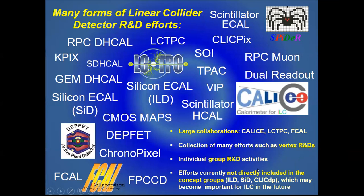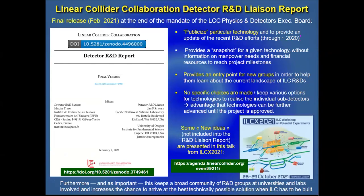Since more than 30 years, there are many forms of different linear collider R&D activities existing, which includes contributions within large collaborations such as CALICE, CTP, and CF-CAL. There are many different efforts in vertex detector R&D as well as individual R&D groups. There is also R&D effort ongoing not currently included in the concept groups for the LC or CLIC experiments, but which can become relevant in the future.